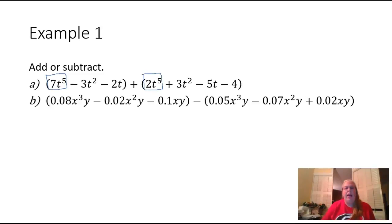When you find that you have like terms, all you have to do is combine the coefficients. In this case, we're adding those together. So I'm going to add seven plus two and this is going to give me nine of those t to the fifth powers. Notice I'm not going to change the exponent. That's because I'm not multiplying anything, I'm just adding.